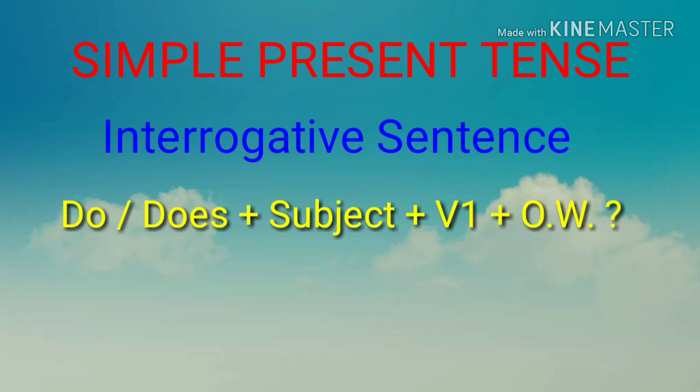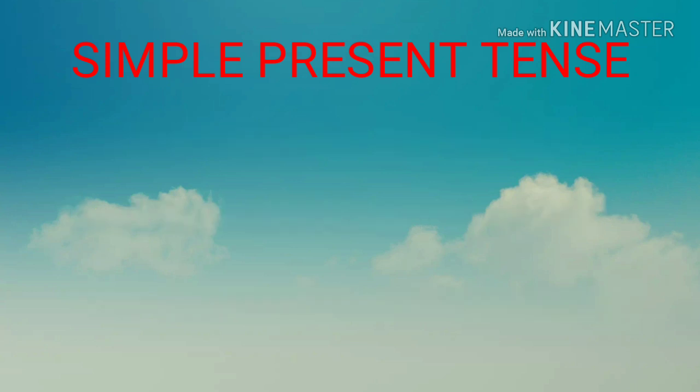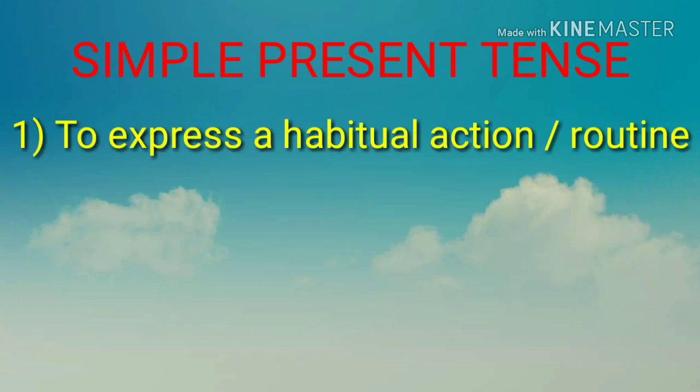चलो इसी sentence का interrogative sentence बनाते हैं। उसके लिए formula: do or does plus subject plus first form of the verb plus other words. Example: 'Do we drink milk every day?' — क्या हम हर सुबह दूध पीते हैं? अब इस simple present tense का use किस तरह और कहाँ कहाँ होता है यह देखते हैं।